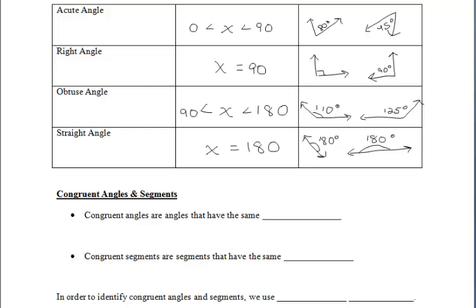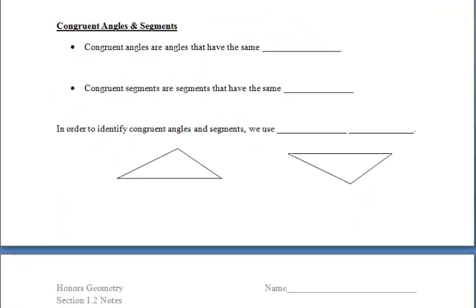Let's talk about congruent angles and segments. Congruent angles are angles that have the exact same measure. We use the word measure for angles. And congruent segments are segments that have the same length. We say segments have the same length.